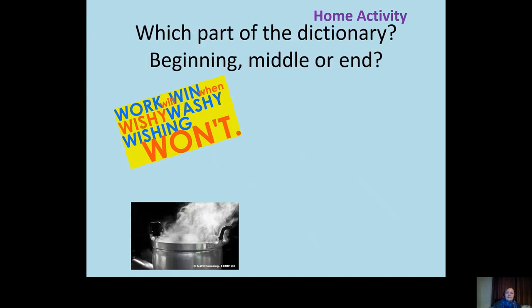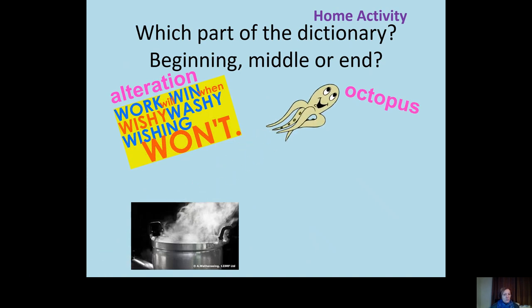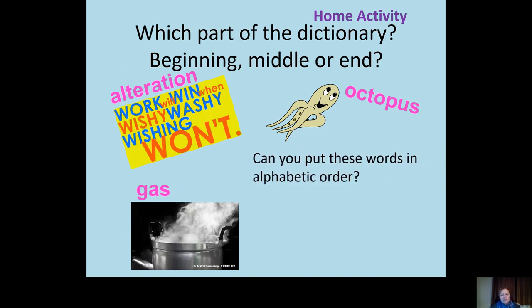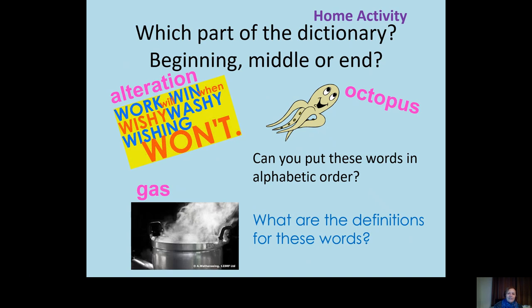Another home activity: which part of the dictionary would you need for these words? 'Alteration' beginning with A — we'd start at the beginning. 'Octopus' — somewhere in the middle. 'Gas' — it's between alteration and octopus, so somewhere in the middle too. It's about using what you already know to make it as simple as possible. You can also ask children to put words in alphabetical order and find the definitions, and change the words as much as you like.